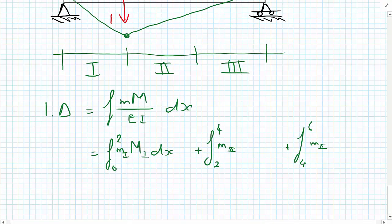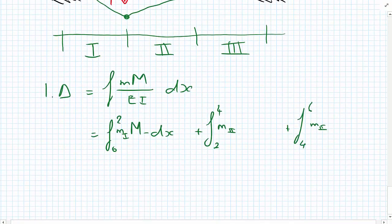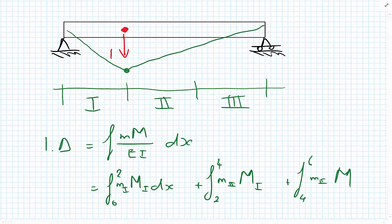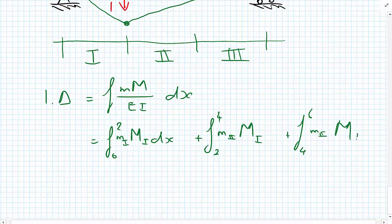The real bending moment function M is applicable over the region between A and the point load, covering Regions I and II. The unit load moment function m also applies for the first region until you reach the point load. However, from the third region onwards — after the point load — there is a new bending moment function. So each region has its own M and m expressions integrated separately over EI.